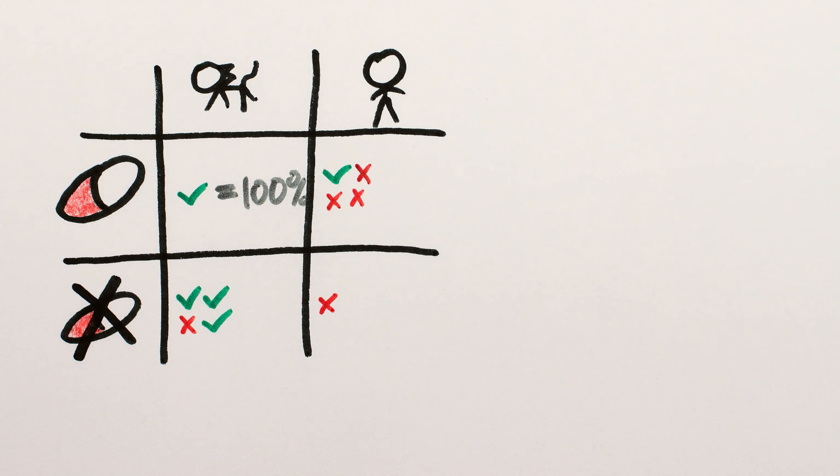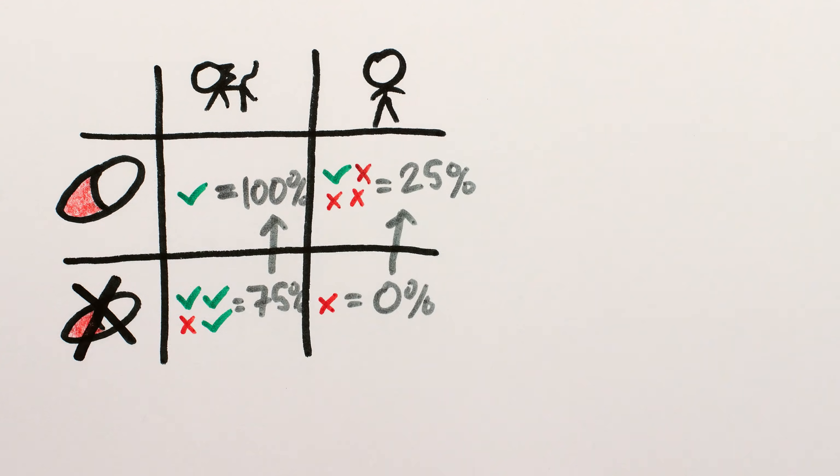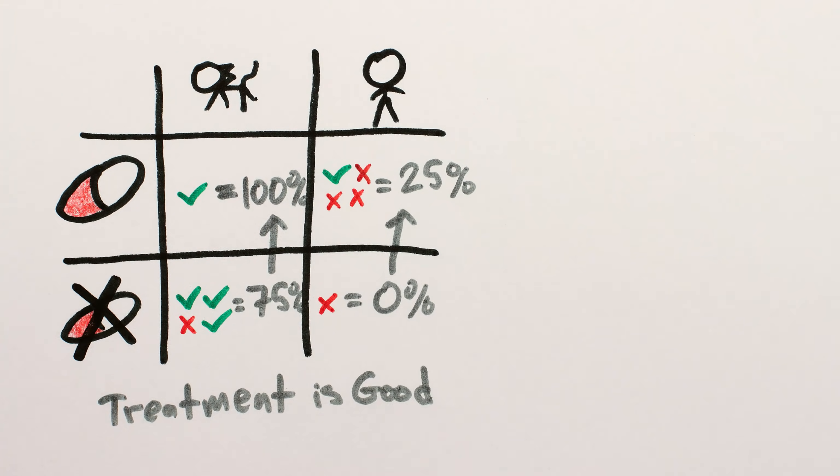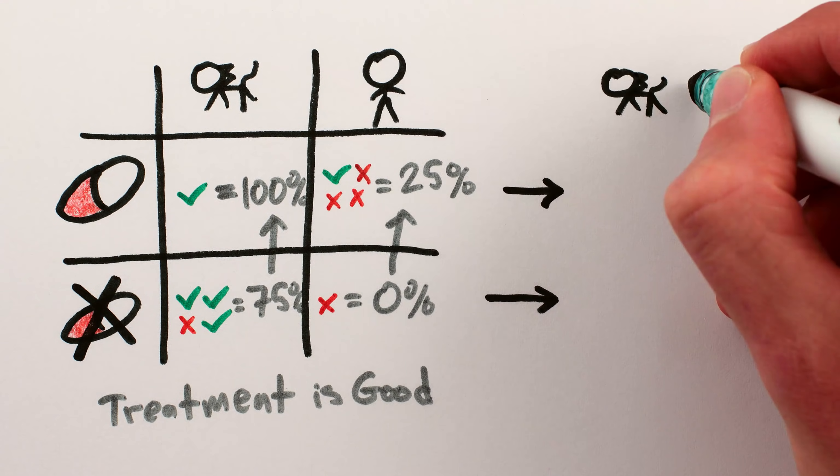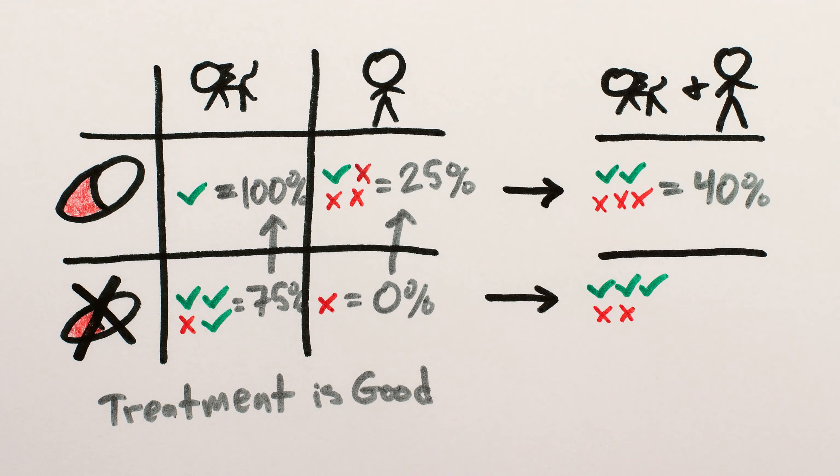So in our sample, 100% of treated cats survive while only 75% of untreated cats do, and 25% of treated humans survive while 0% of untreated humans do. Which makes it seem like the treatment improves chances of recovery, except that if we aggregate the data, among all people and cats treated only 40% survive, while among all people and cats left on their own, 60% recover.